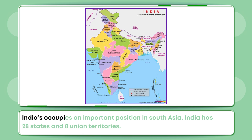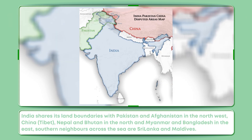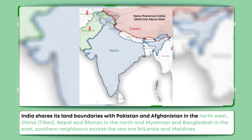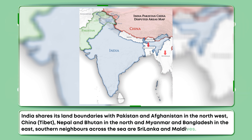India occupies an important position in South Asia. India has 28 states and 8 Union territories. India shares its land boundaries with Pakistan and Afghanistan in the north-west, China, Tibet, Nepal and Bhutan in the north, and Myanmar and Bangladesh in the east. Its southern neighbors across the sea are Sri Lanka and Maldives.